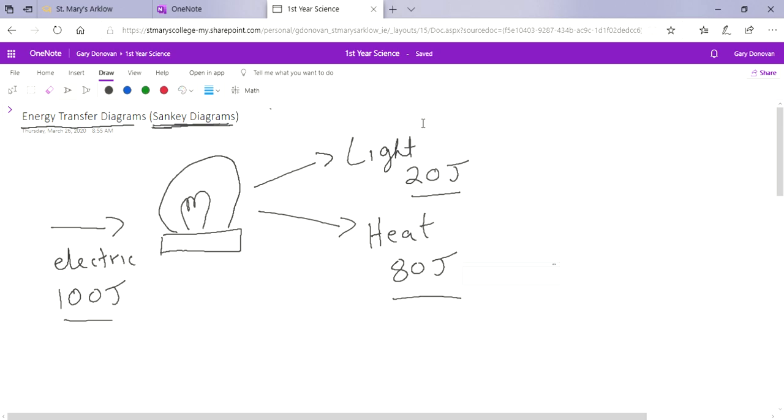Now the problem is not everyone is as good a drawer as me. Everyone can't draw these kind of fantastic light bulbs that I can draw, or fantastic televisions or cars or whatever else needs to be drawn. So for this reason, scientists came up with a special way or a different way to draw this or to represent this information. They call them energy transfer diagrams or Sankey diagrams. So let's have a look at an example of how you do one.